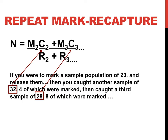Now, let's go through an example without visuals as some practice. The simple mark recapture is quite easy to figure out, but the repeat mark recapture can be a bit challenging. This problem reads: if you were to mark a sample population of 23 and release them, and then you caught another sample of 32, 4 of which were marked, and finally caught a third sample of 28, 8 of which were marked, what would you estimate the size of this population to be? In this example, C is highlighted — 32 individuals were caught in the second round of capturing, C2, and 28 individuals were caught in the third sample, C3.